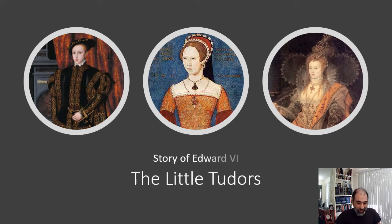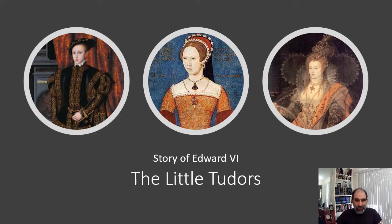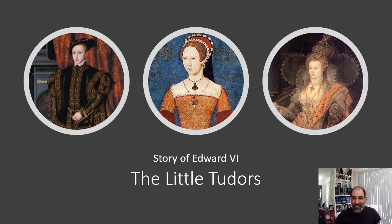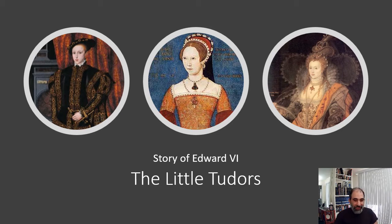Hello everyone and welcome to our last few lectures of the History 110 course. We're getting to the point of the later Tudors. We left off last time with Henry VIII, who had three children that I mentioned in the last lecture: Edward, Mary, and Elizabeth. We're going to go through the story of all three of them — three short lectures, one on Edward, one on Mary, and one on Elizabeth.